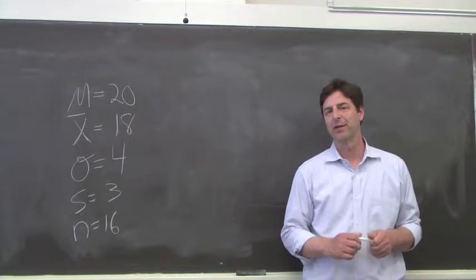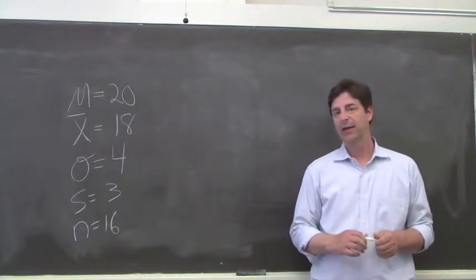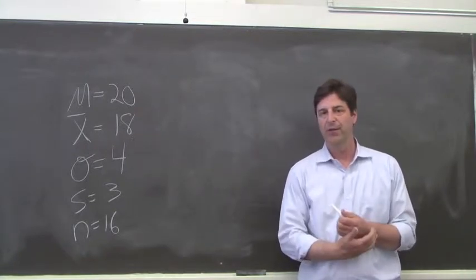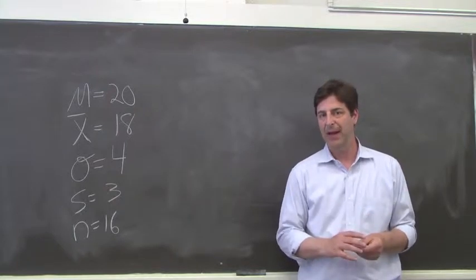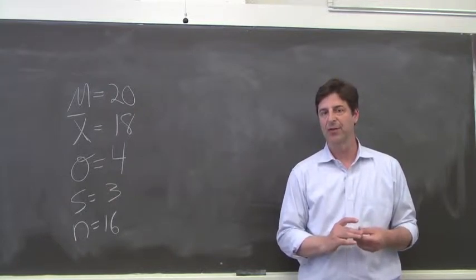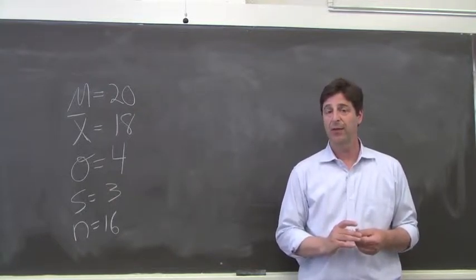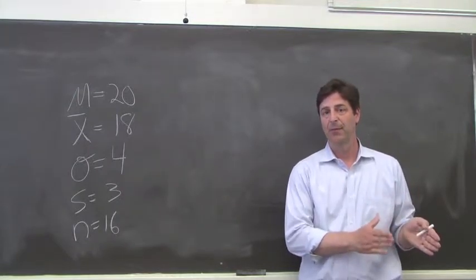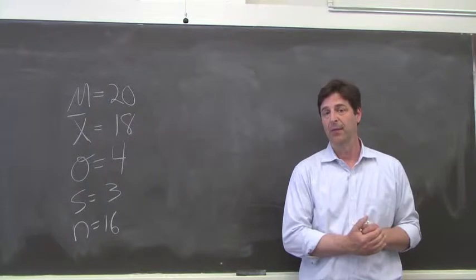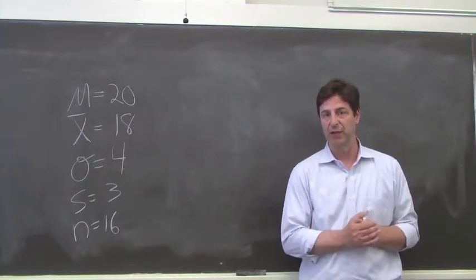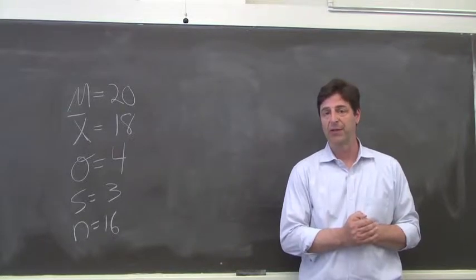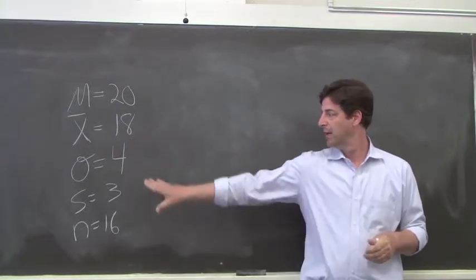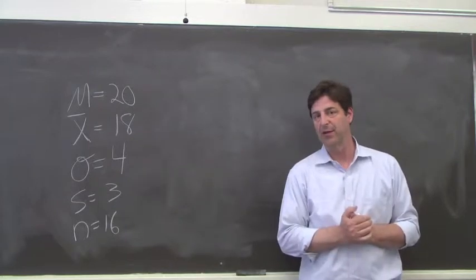Hi, this is Tim Erden, author of Statistics in Plain English. In this video we are going to use Appendix B, the family of t-distributions, to calculate the probability of obtaining a sample mean by chance that is different from the population mean when we don't know the population standard deviation.